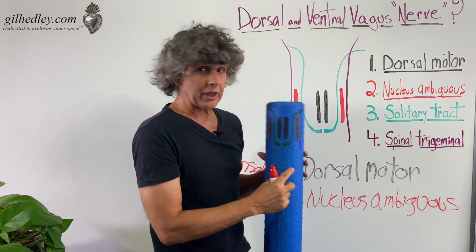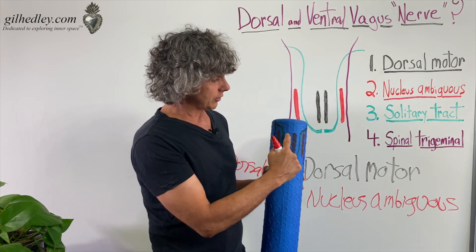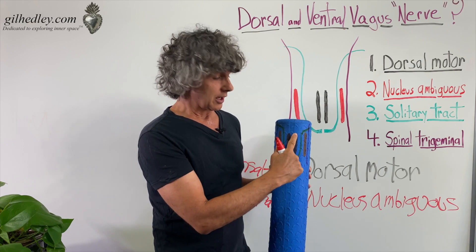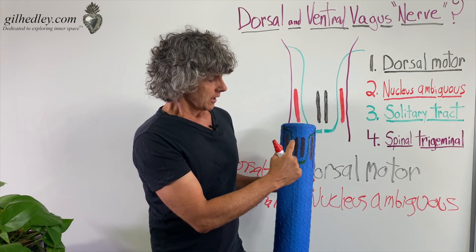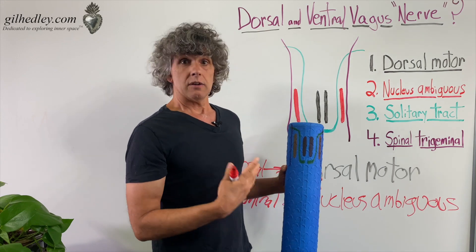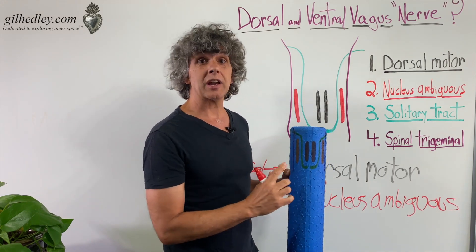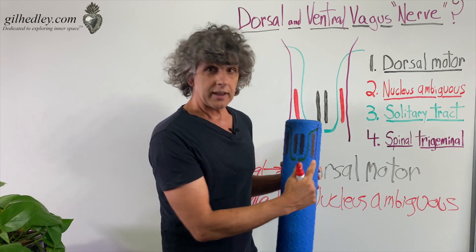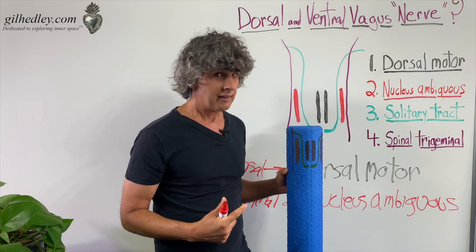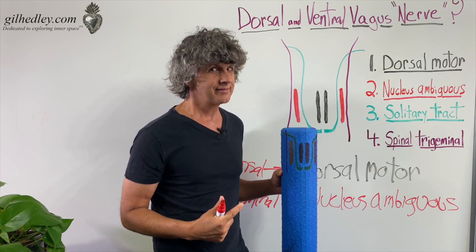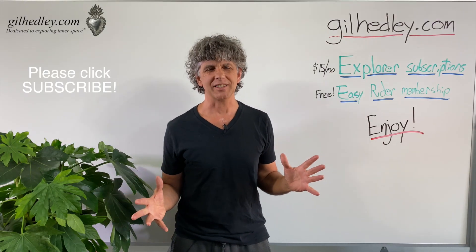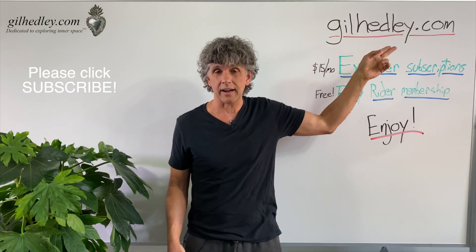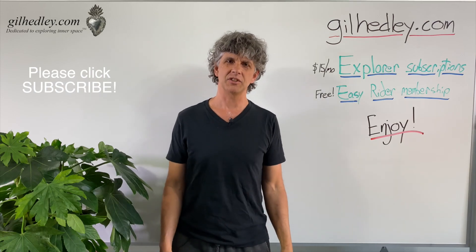So if you're thinking dorsal vagus nerve, you're thinking about those nerve fibers originating in the dorsal motor nuclei. If you're thinking ventral vagus, you're thinking about the nerve fibers originating in the nucleus ambiguus. Thanks for watching — if you'd like to study more with me, go to gillheadley.com. There's a ton of stuff there. Enjoy.